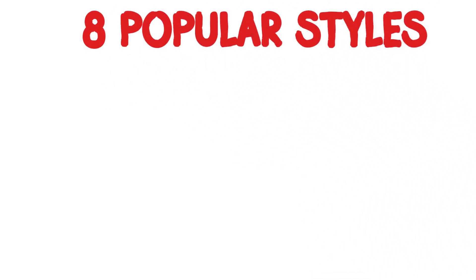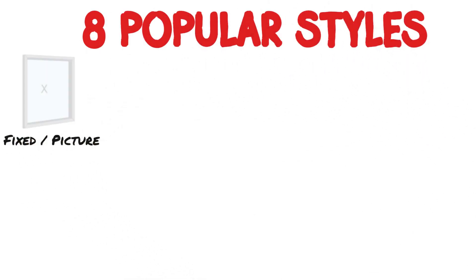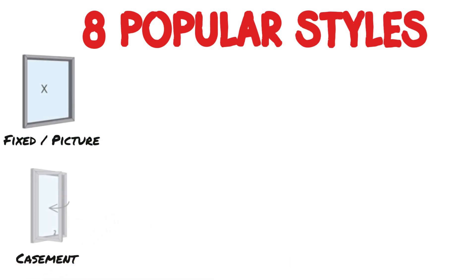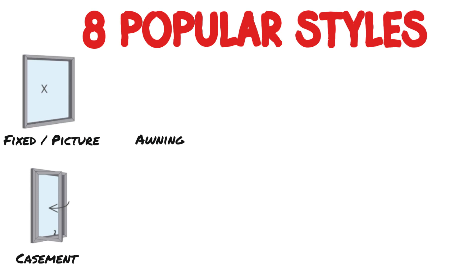Let's start with the 8 most popular styles. First is called a fixed or picture window — this is simply a window that does not open. Next is a casement window, which is on a hinge and opens outward. An awning window also opens to the outside, but the hinge is located at the top.